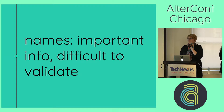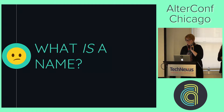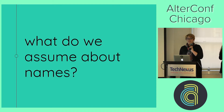Names are obviously really important information, however names can take a lot of different forms and it's hard to account for all of them. If we want to build validation into our forms, how do we validate names so that we can include everyone — and can we?